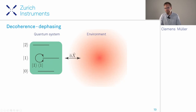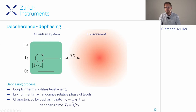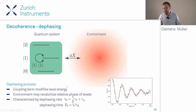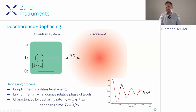When operator O simply changes the energy of a level, the random fluctuations induced by the environment operator X lead to randomization of the relative phase—this is dephasing, characterized by dephasing rate gamma_2 or dephasing time T2. Measuring T2 uses a Ramsey experiment, yielding an oscillation with a superimposed exponential decay at rate gamma_2.